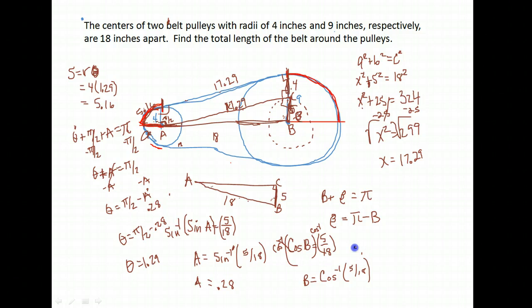Inverse cosine of 5 over 18, if you're in radian mode, which you should be, is 1.28 or 1.29. So our angle B here is 1.29 radians.